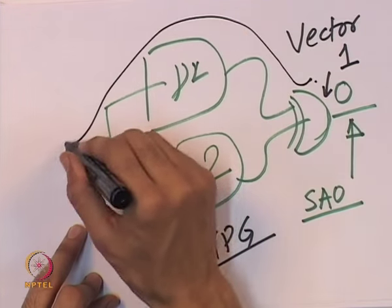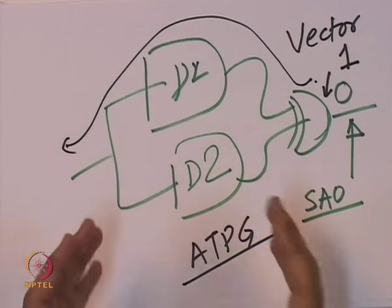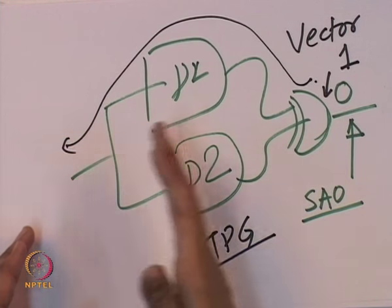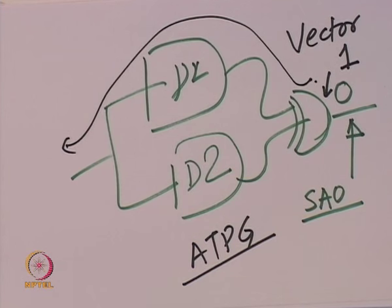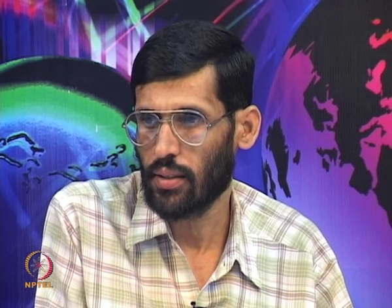You want to find a set of inputs that can produce output 1 at the XOR. If you can obtain such a vector, then at least once the two designs produce different outputs, hence they are not equivalent. Whether you formulate this as a SAT problem or an ATPG problem, the challenge is that finding such an assignment is an NP-complete problem.